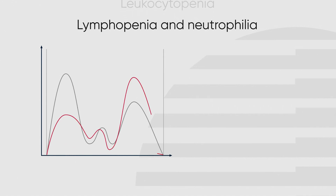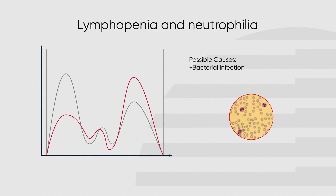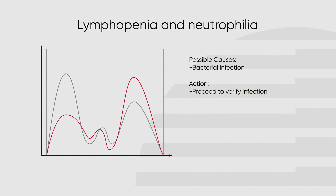A decrease in the lymphocyte peak combined with an increase in the granulocyte peak is an indication of a bacterial infection, such as E. coli. If this occurs, proceed to verify infection.